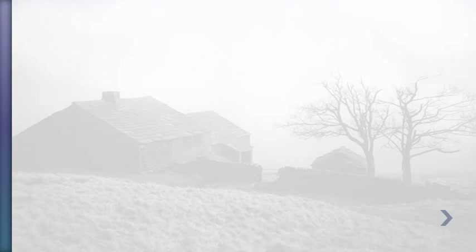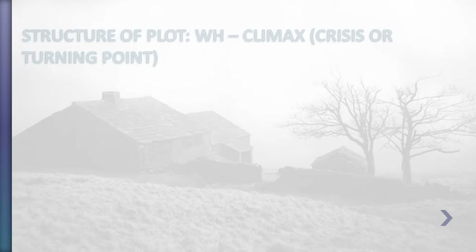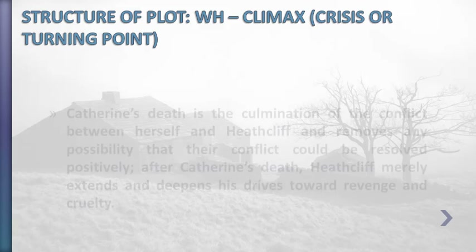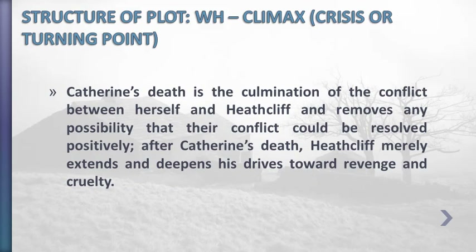Heathcliff's desire for revenge puts the whole world of Wuthering Heights in direct conflict with him, and this conflict eventually leads to the climax — the crisis or turning point in Wuthering Heights. The climax is represented by Catherine's death, which is the culmination of the conflict between herself and Heathcliff, and removes any possibility that their conflict could be resolved positively. After Catherine's death, Heathcliff merely extends and deepens his drive toward revenge and cruelty.